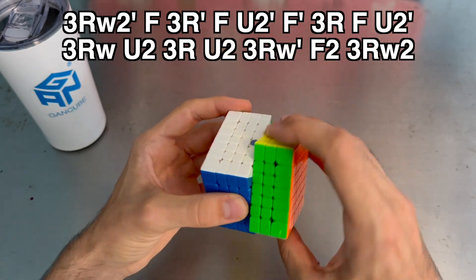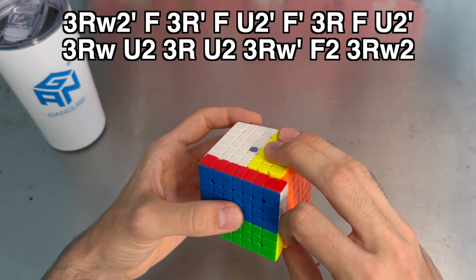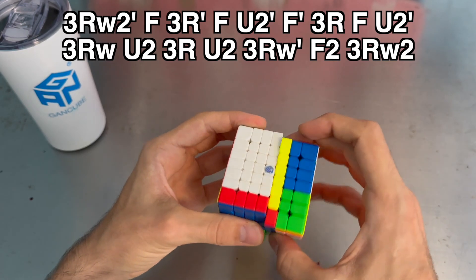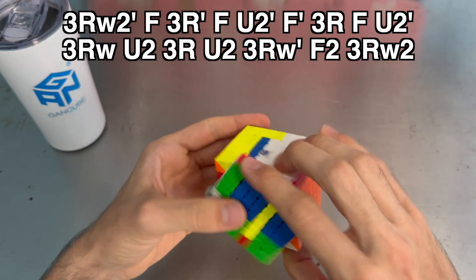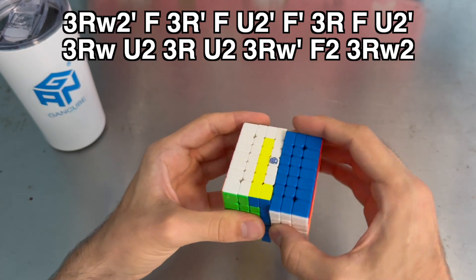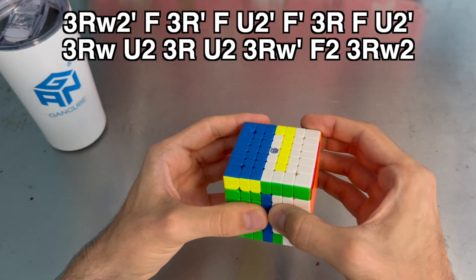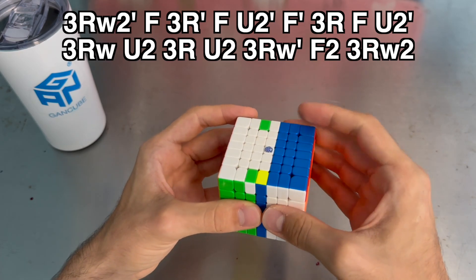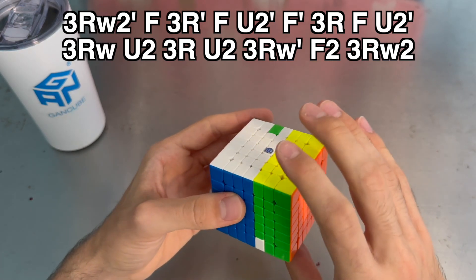So that's 3 wide R2', F, then middle slice here, down, F, U2, F', middle slice up again, F, U2, 3 wide R, U2, middle slice up again, U2, R', F2, R2.